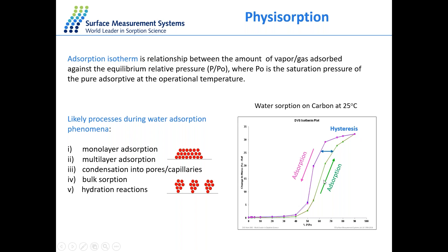These are two cycles. The green and red represent the adsorption branch, characterized by stepping up the relative pressure from 0 to 90%, resulting in increasing sample mass. The desorption branch is obtained by reducing the relative pressure from 90% back to 0%, resulting in decreasing adsorption. This is a typical adsorption isotherm, and the gap between adsorption and desorption is called hysteresis.